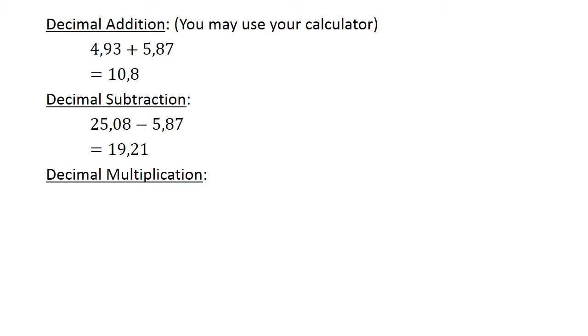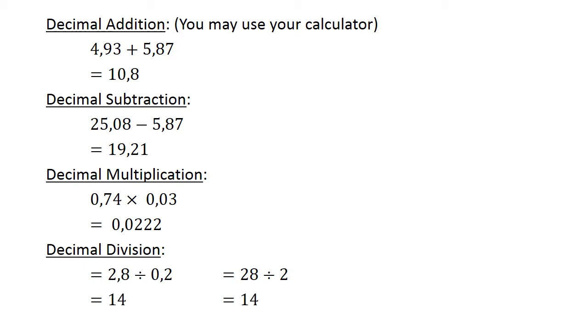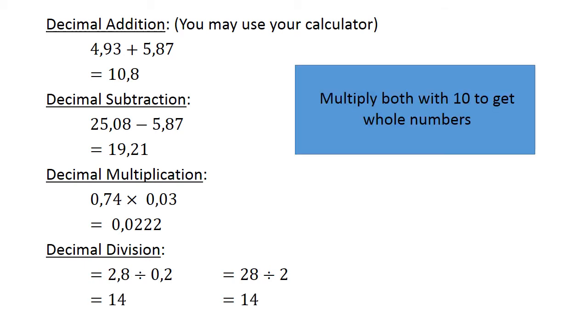Decimal multiplication: 0.74 times 0.03 equals 0.0222. Decimal division: 2.8 divided by 0.2 equals 14. Multiply both by 10 to get whole numbers: 28 divided by 2 equals 14.